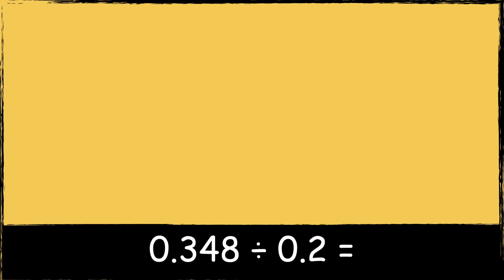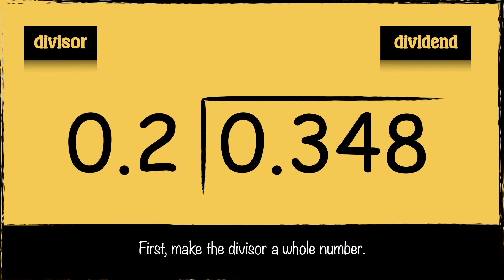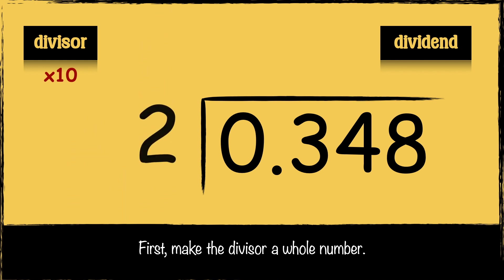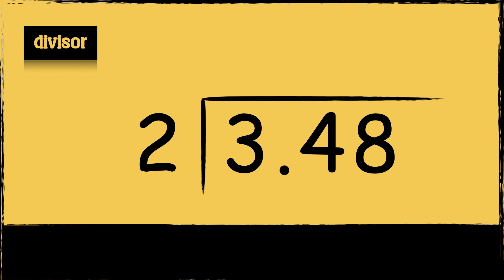Let's have a look at one more example: 0.348 divided by 0.2. First we need to draw the bus stop. We put the number that we're dividing — the dividend — inside the bus stop, and we put the number that we're dividing it by — the divisor — next to the bus stop. I'm going to make the divisor into a whole number by multiplying by 10: 0.2 times 10 is 2. I also need to multiply the dividend by 10: 0.348 times 10 is 3.48. Now that my divisor is a whole number the calculation will be easier.